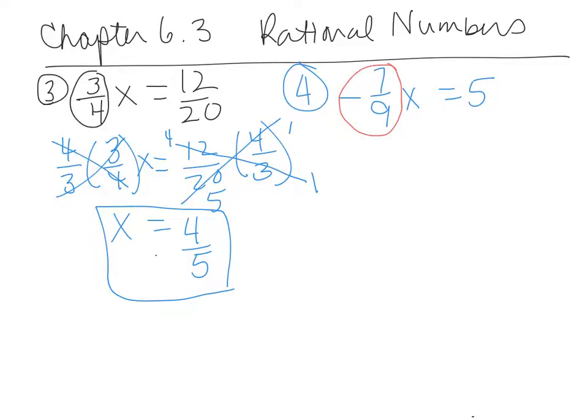So we're going to multiply by -9/7 times -7/9. Both of those are negatives. x equals 5 times -9/7 because that's the reciprocal. That lets us get to a coefficient of 1.